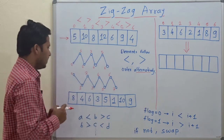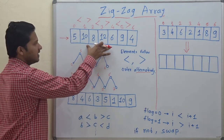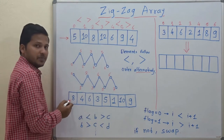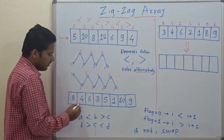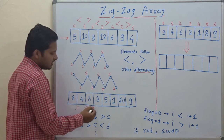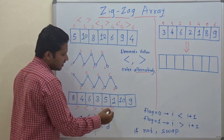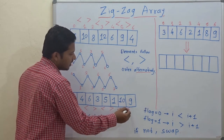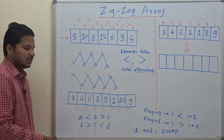Let's see this second example. Here 8 is greater than 4, 4 is less than 6, 6 is greater than 3, 3 is less than 5, 5 is greater than 1, 1 is less than 10, and 10 is greater than 9. So this is a zigzag array.